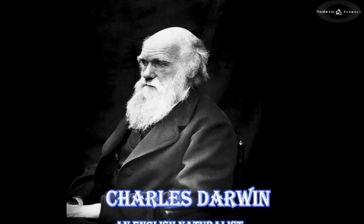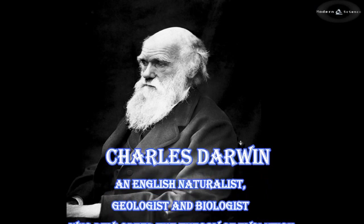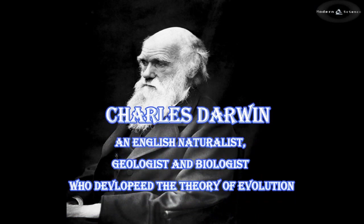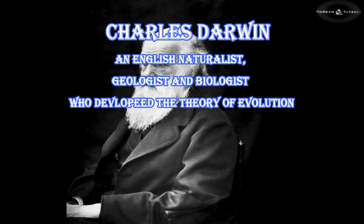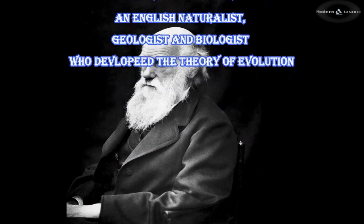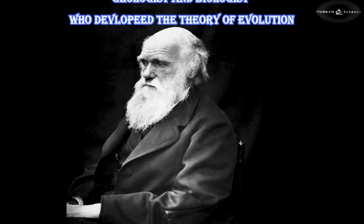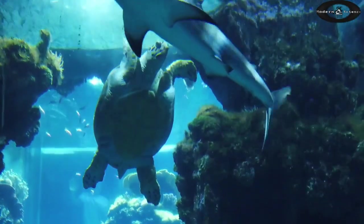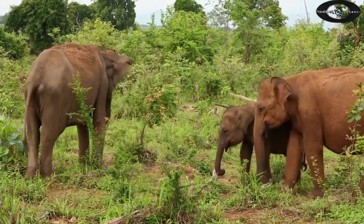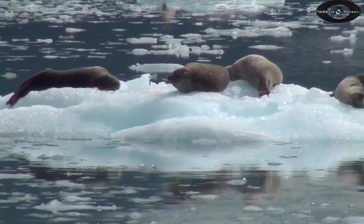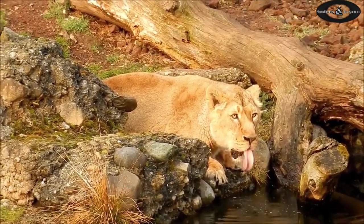In the 19th century, Charles Darwin, an English naturalist, geologist, and biologist, developed the theory of evolution. Darwin, in 1859, explained how the vast diversity of life could all have arisen from a single common ancestor.